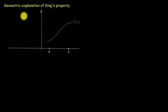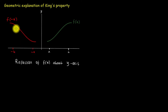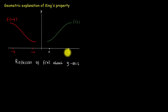Let's look at the geometric explanation of king's property. Suppose we have a function that is continuous over the interval [a, b]. If I try to reflect this function about the y-axis, I'm going to have f of negative x — that is, the domain is just going to be the negative of all these values, so I'm going to have this to be minus a.